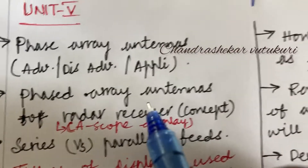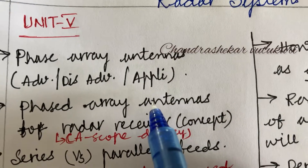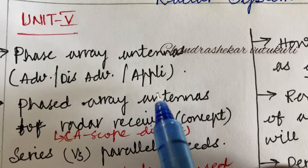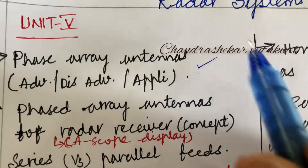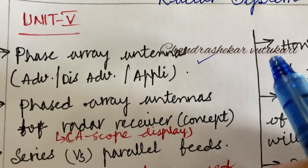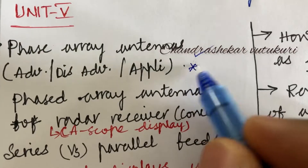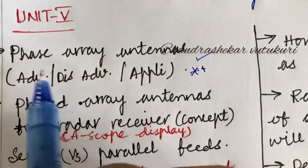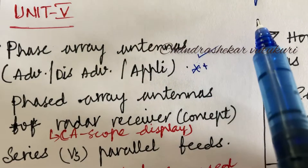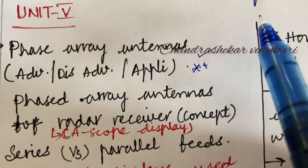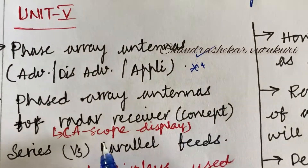The Unit 5 question is all about phase array antennas — advantages, disadvantages, and applications. Instead of the top-most question which I can highlight, related to phase array antenna you may be getting any part of the question along with a problem. Dear students, phase array antenna of radar receiver is an important topic.